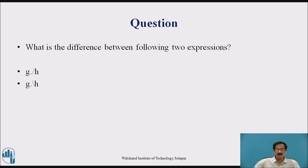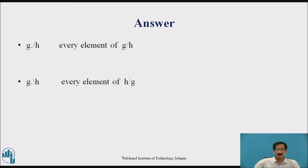What is the difference between following two expressions: G slash H and G dot backslash H. The answer is G dot backslash H, here every element of G will be divided by H. G is simply G divided by H, but G dot backslash H means it is simply H divided by G.